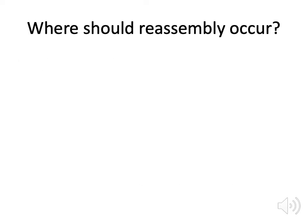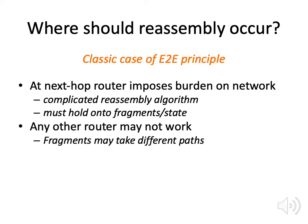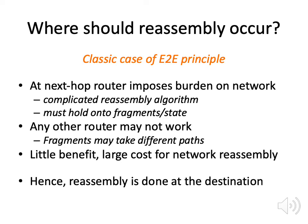Where should reassembly occur? It could happen at the next router in the network where there's a bigger MTU size, but the end-to-end principle says we want to do all these things at the end host. If we do it at the next-hop router, that router has a complex reassembly algorithm and has to hold state to buffer fragments, while routers have expensive memory and handle requests from many people. Furthermore, doing it at any other router may not work because fragments may take different paths. There's little benefit and a large cost of doing reassembly in the network, so reassembly is always done at the destination.